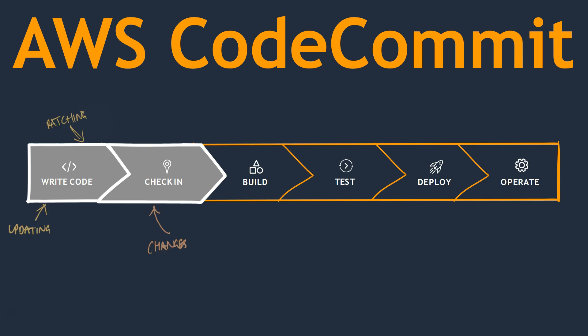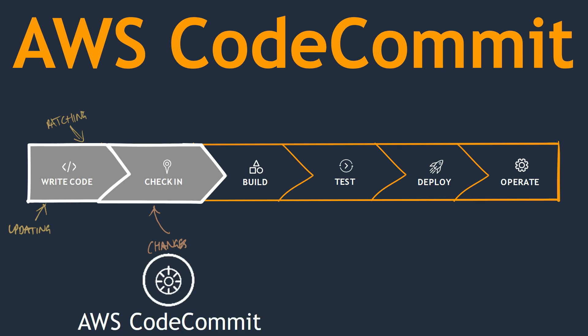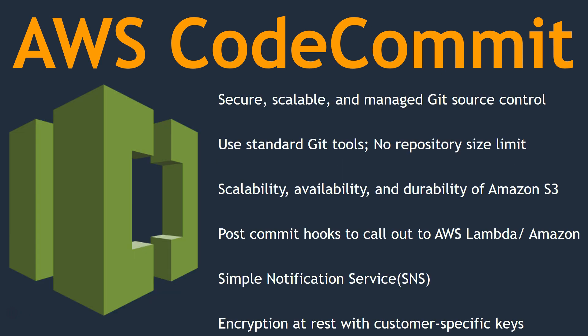Typically you are writing some code — maybe it is an update for existing code or a patch for code that is already in production. There might be some new features and you want to check in. This is where CodeCommit comes in. You can write your code and commit it. But why use CodeCommit when you have all the other services?